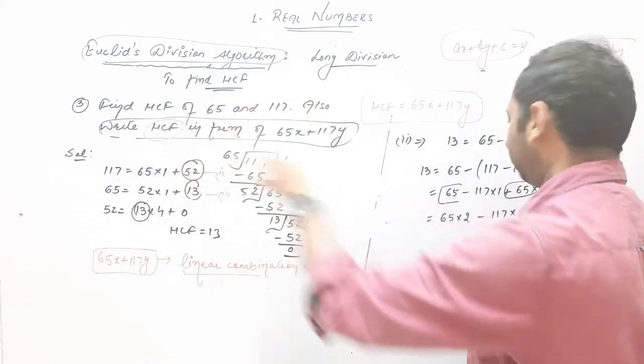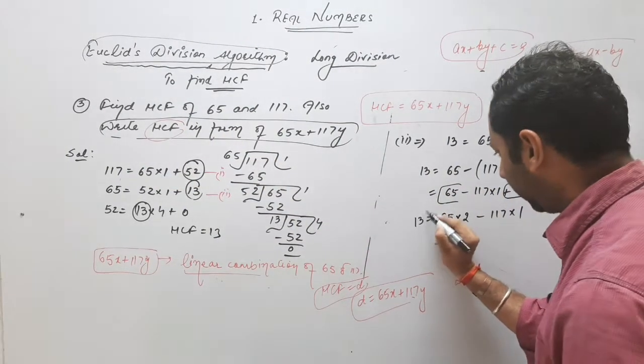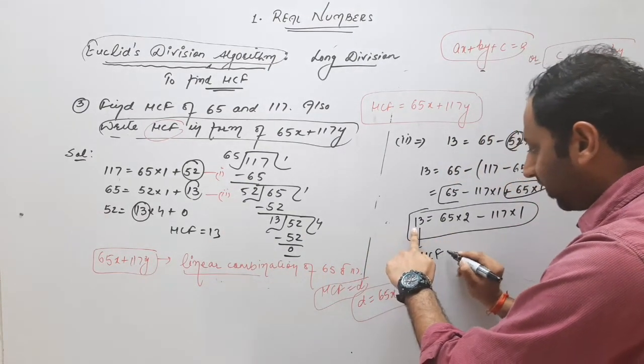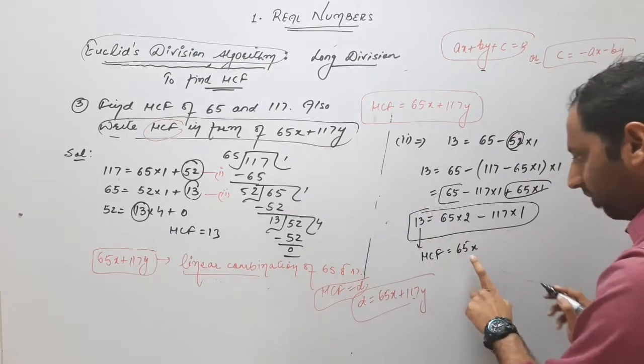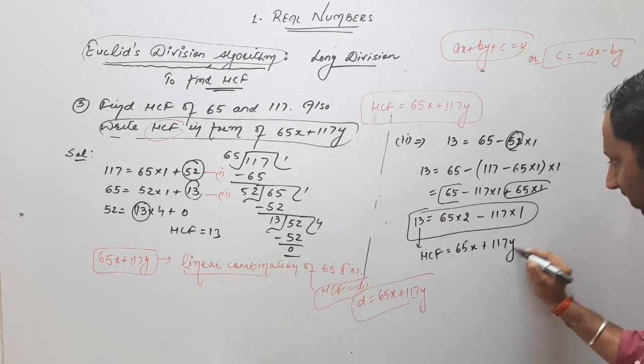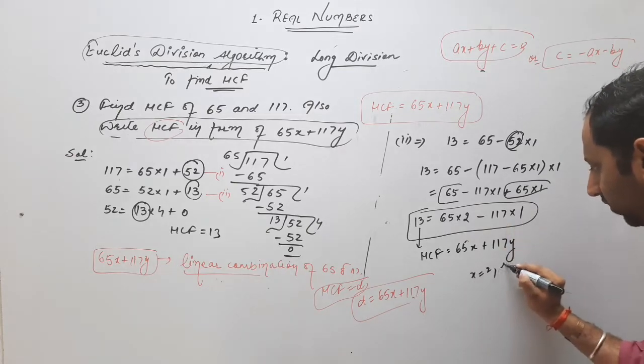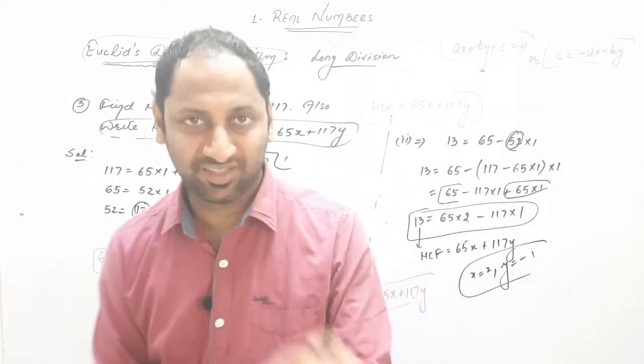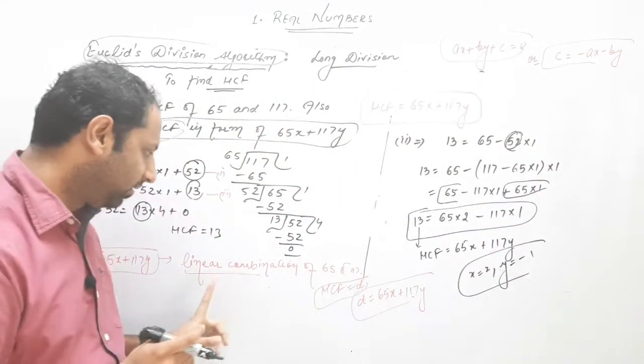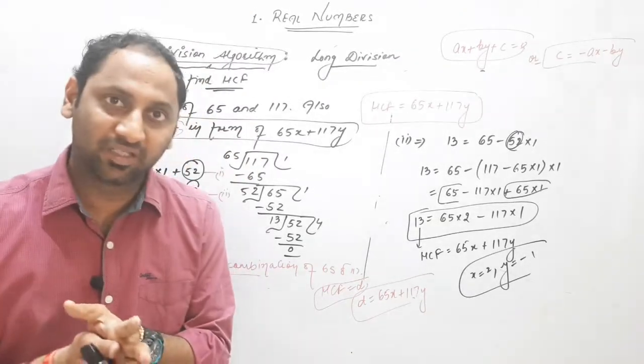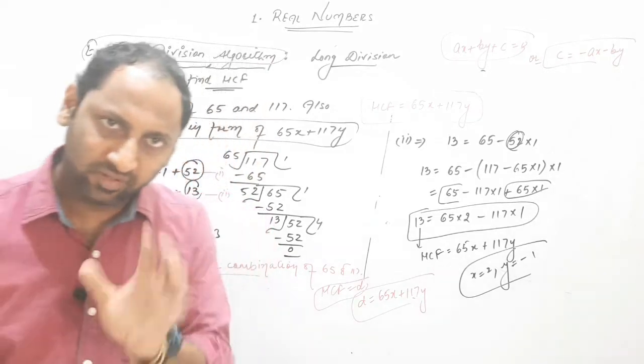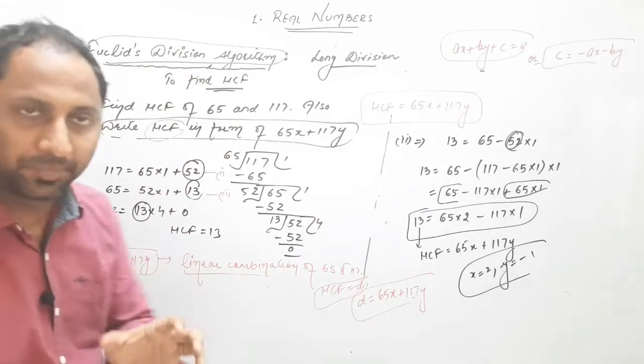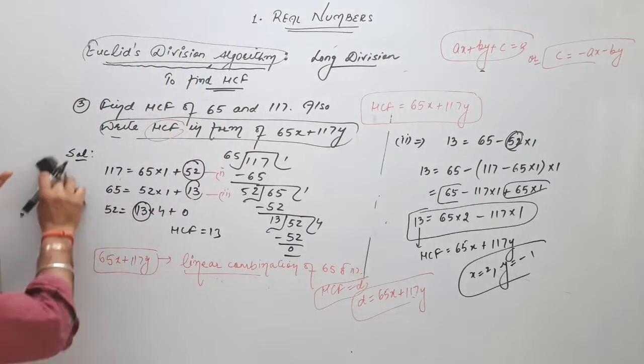This is there, last equation drop, reason here remainder 0, our target is to take remainder second last value find, first remainder, so check. Question the answer is there, HCF is in the form of 65x, compare x is 2, plus 117y, y what is minus 1. This is the basic concept of expressing HCF in the linear combination of the numbers, or you can say both numbers and HCF.